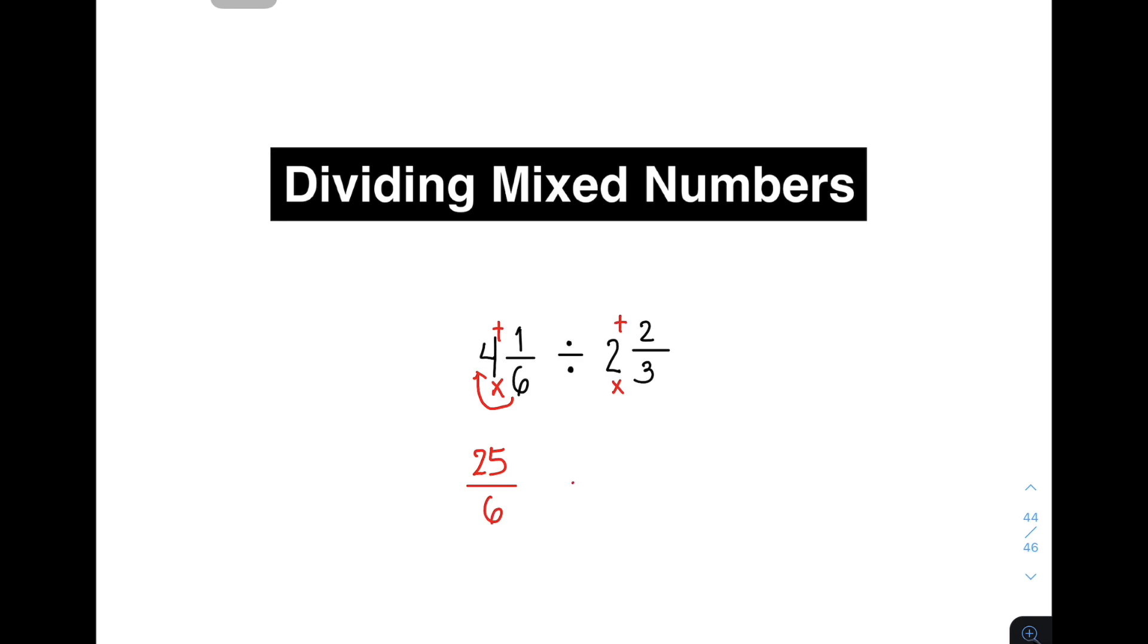And then copy the operation which is division. Then for the second mixed number, ulitin mo lang yung process. Multiply your denominator. 3 times 2. That is 6 plus 2. That will give you 8. And then copy your denominator which is 3. Okay, let me repeat my steps. 3, your denominator times 2. 6 plus 2. That is 8. And then copy your original denominator.